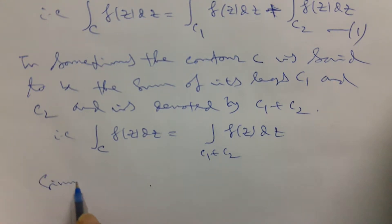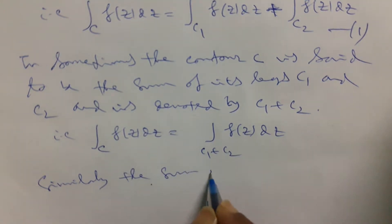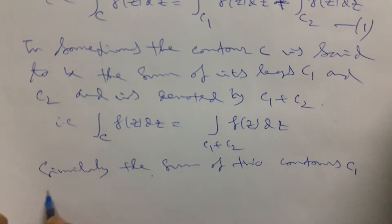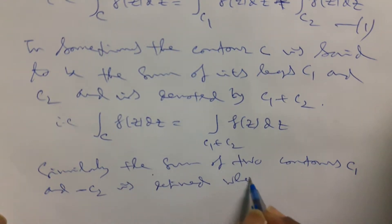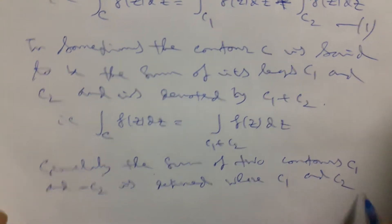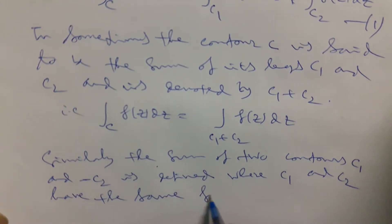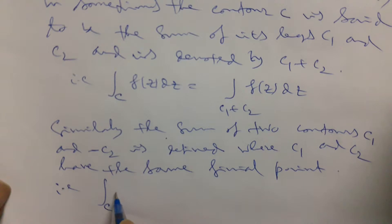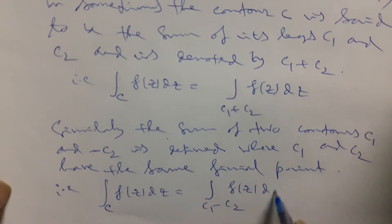Similarly, the sum of two contours C1 and minus C2 is defined when C1 and C2 have the same final point. That is, the contour integral over C of f(z)dz can be denoted by C1 minus C2 of f(z)dz.